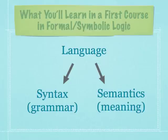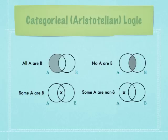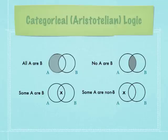The first formal system of logic was developed by Aristotle, known as categorical logic or the logic of Aristotelian syllogisms. Categorical statements take forms like 'all A are B,' 'some A are B,' 'no A are B,' and so on — where A and B refer to categories of things. For example, 'all whales are mammals' expresses that the category of mammals contains the category of whales as a subset. You're taught techniques like modified Venn diagrams for evaluating categorical arguments to see at a glance whether they use a valid or invalid logical form.